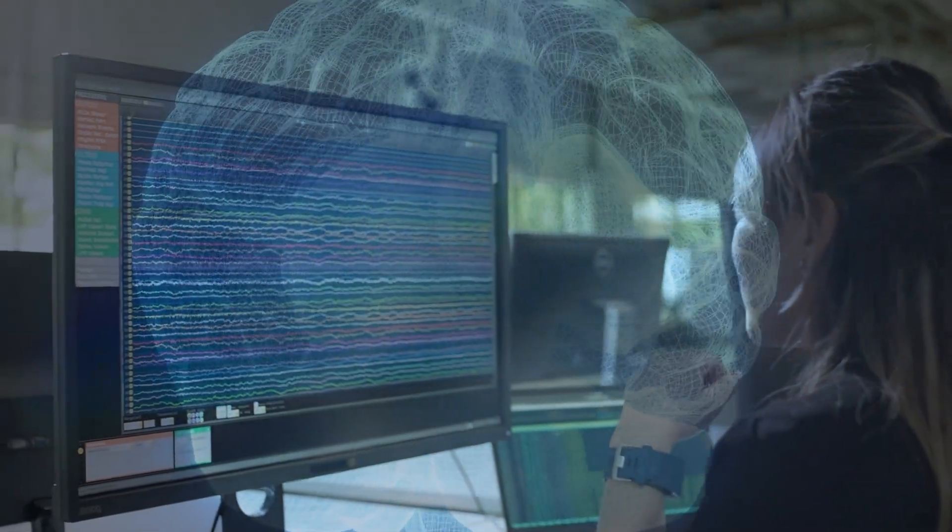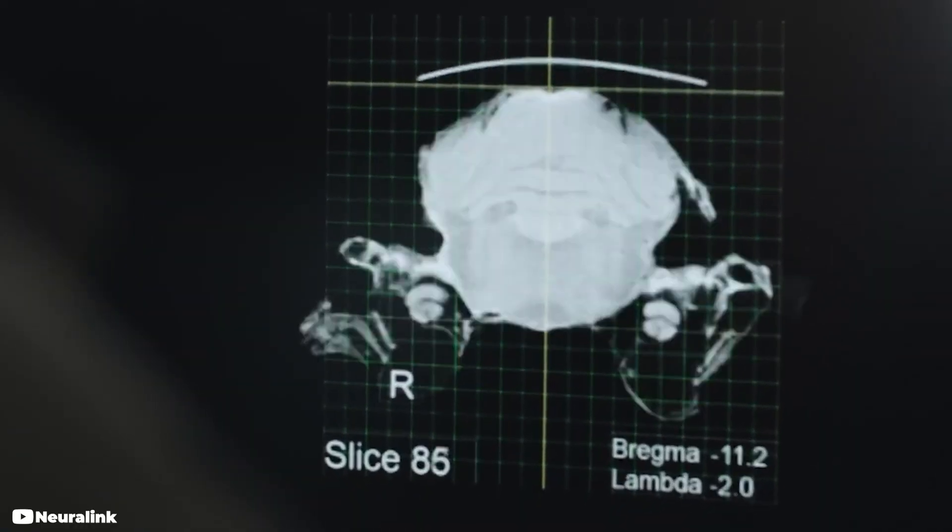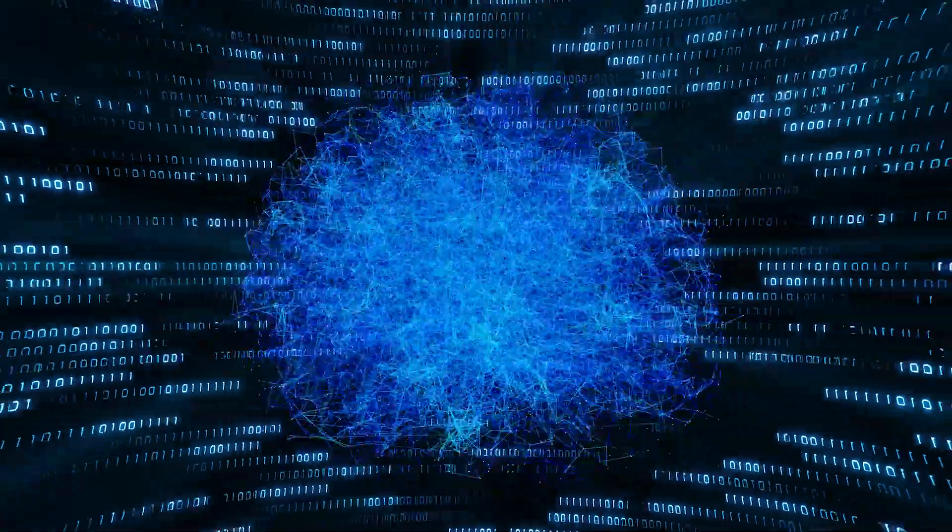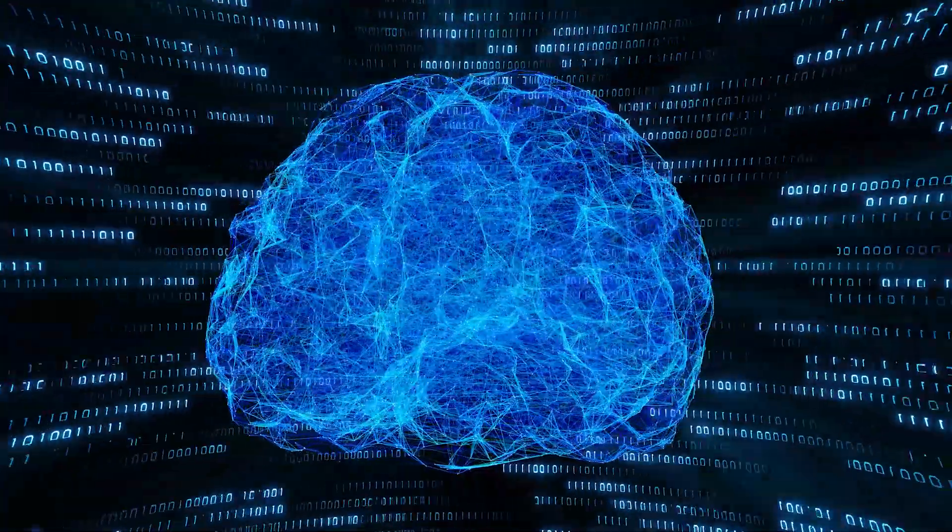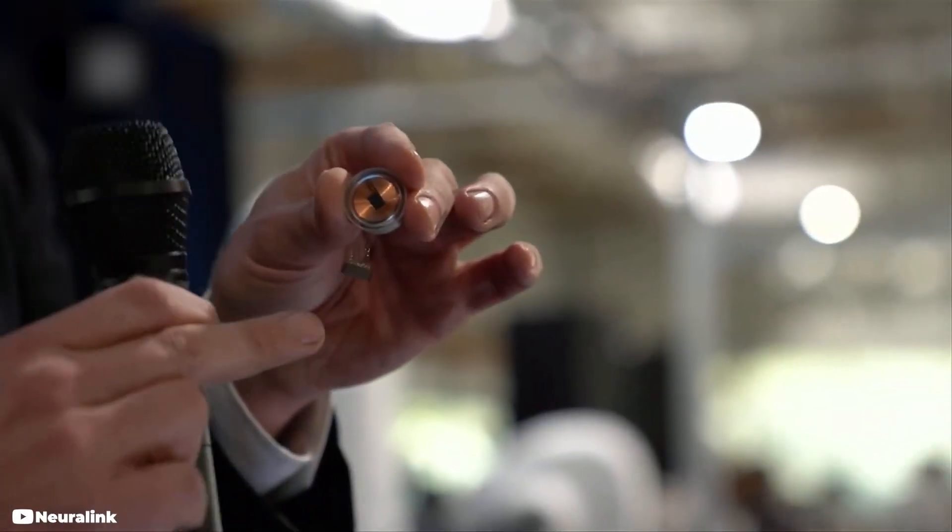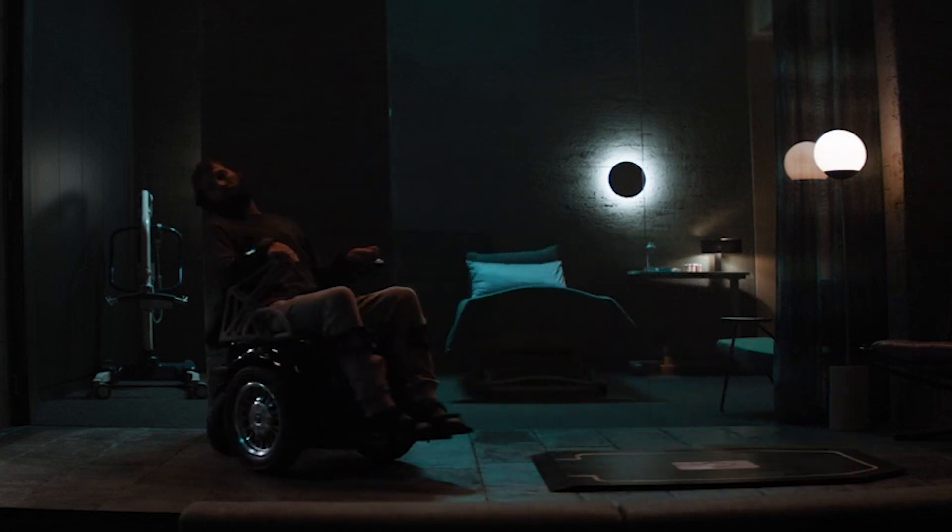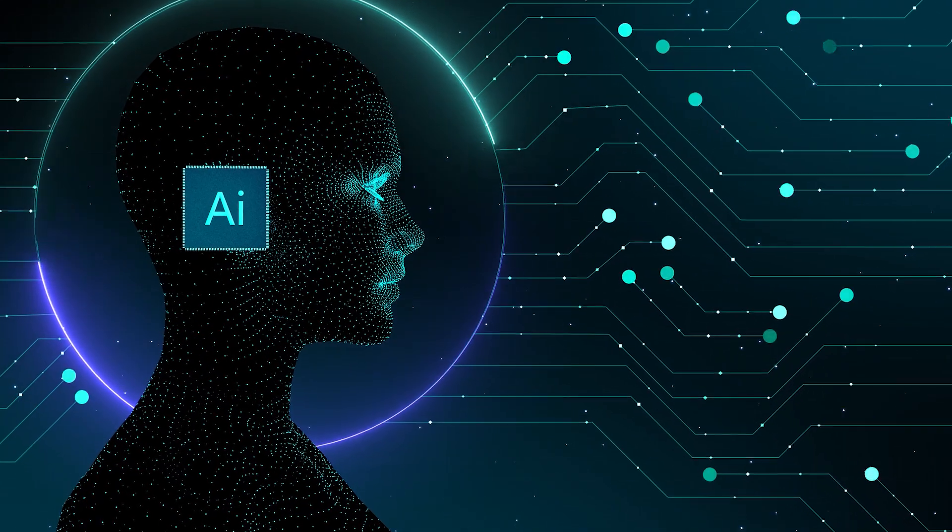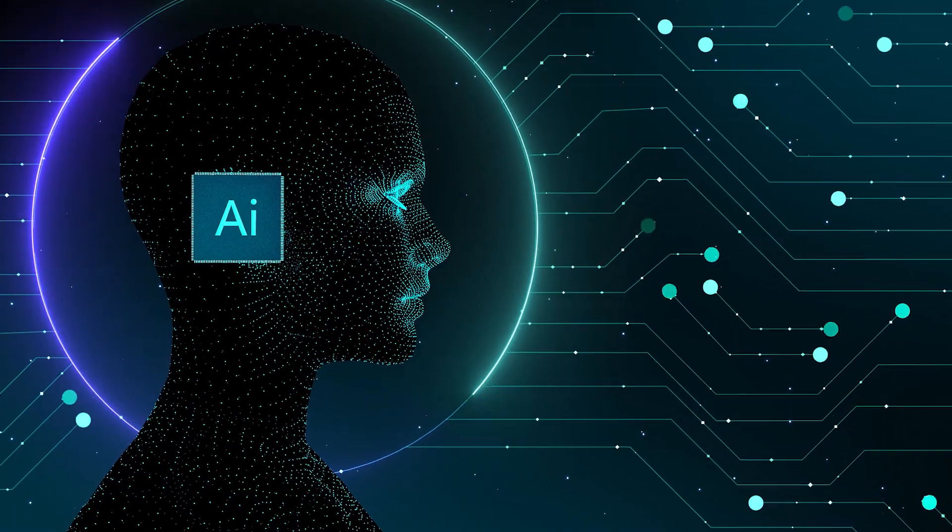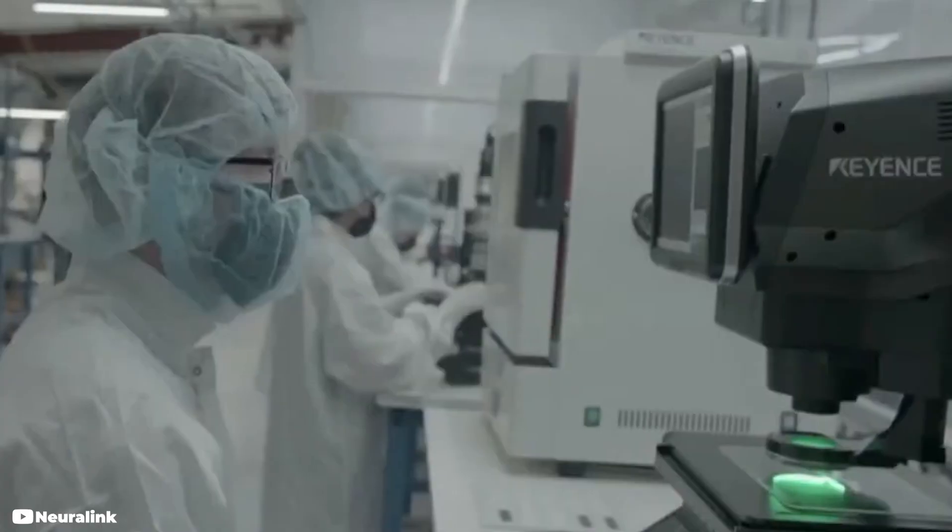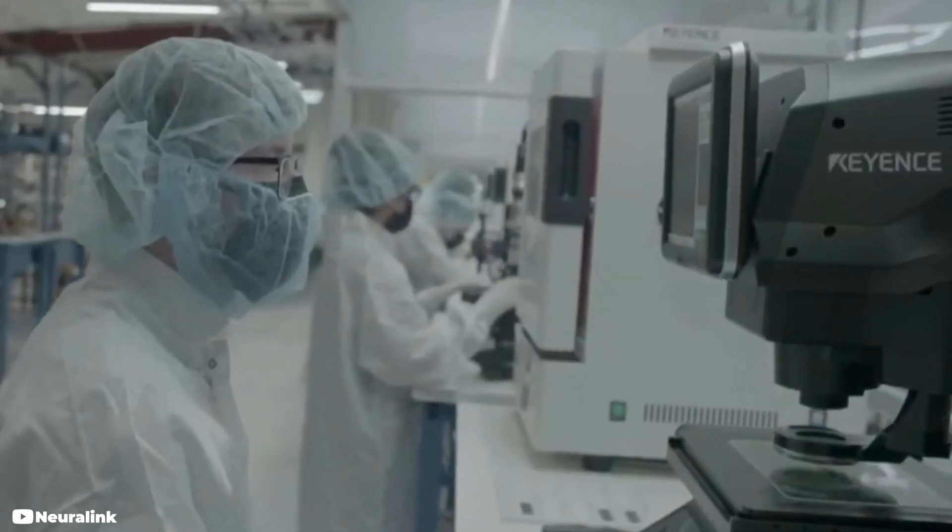Neuralink technology could improve memory recall by recording memories and playing them back at a later date. It could also prevent people from losing their memories as they age by allowing them to upload their memories into an external device. So the benefits of this technology are obvious. It could help people with disabilities to regain control of their lives. It could also help us keep up with artificial intelligence, which is only going to get smarter. However, with great power comes great responsibility, and the ethical implications of Neuralink are many.